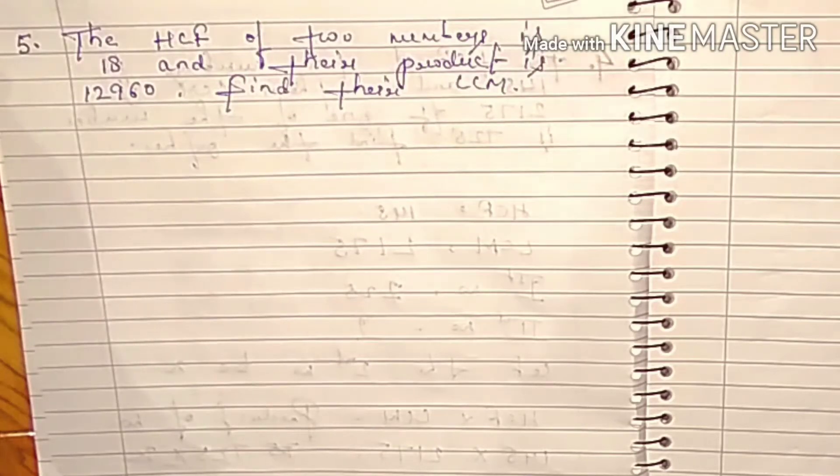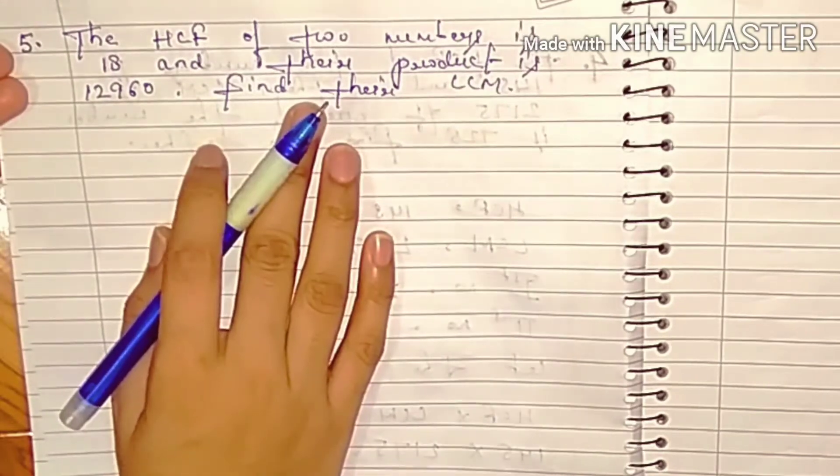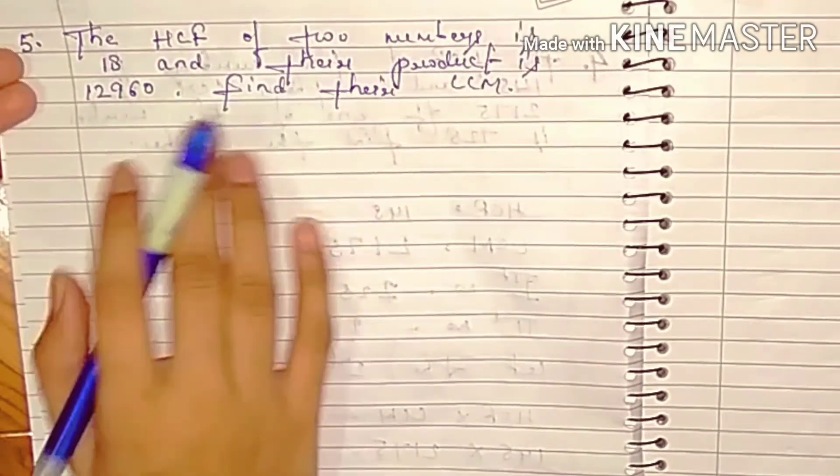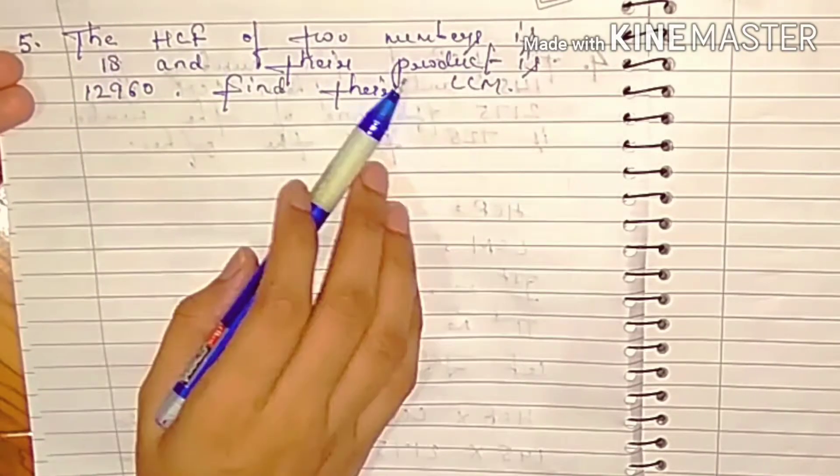Hello students, welcome back to my channel e-learning accounts and maths. So student, item question number five of exercise one point eight is real numbers. The question is: the HCF of two numbers is 18 and their product is 12,960. Find their LCM.